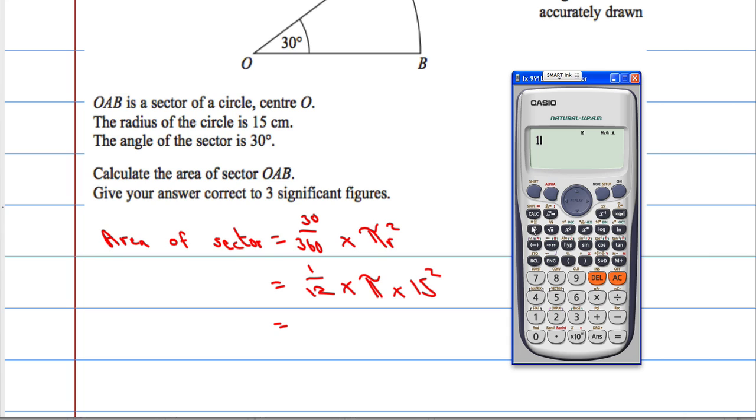So it's 1 twelfth, that's the fraction of the circle, multiplied by π, multiplied by 15 squared.